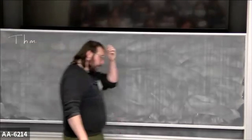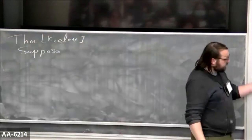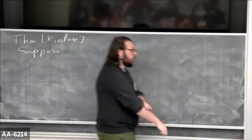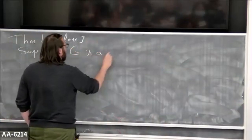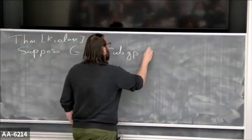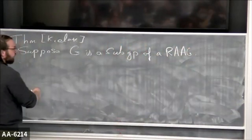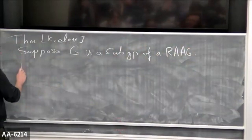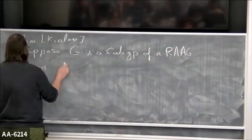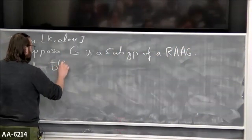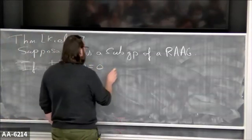You should really expect this theorem to be true if you just replace Q with some infinite group, but we don't know. My favorite theorem — the one that made me feel like I should really care about L² Betti numbers — is the following theorem of Kielak. It's sort of a converse. Suppose G is a subgroup of a right-angled Artin group. Then if the first L² Betti number of G equals zero...